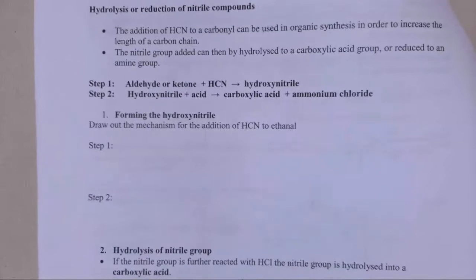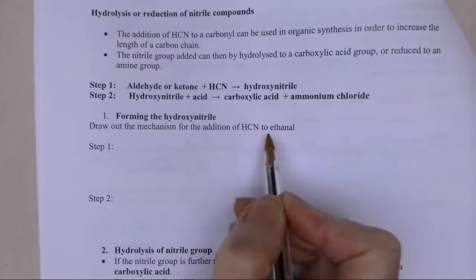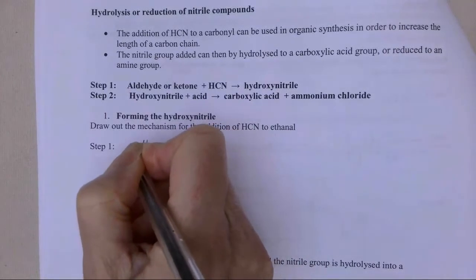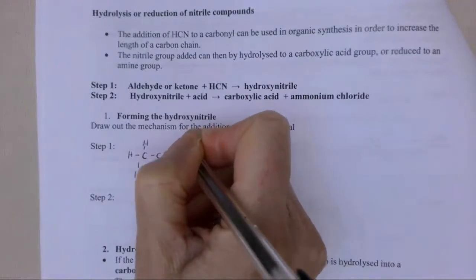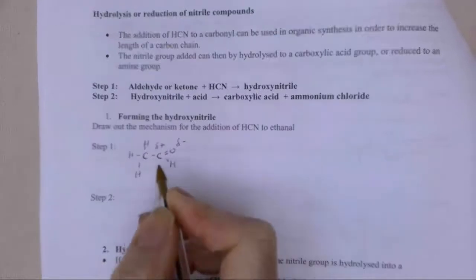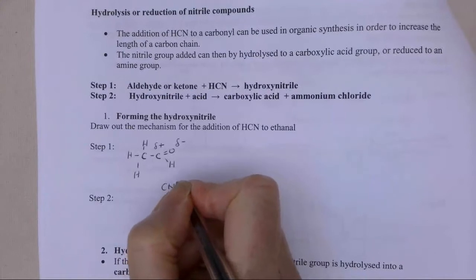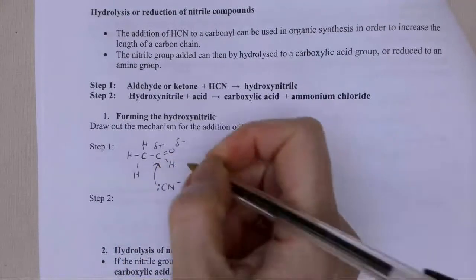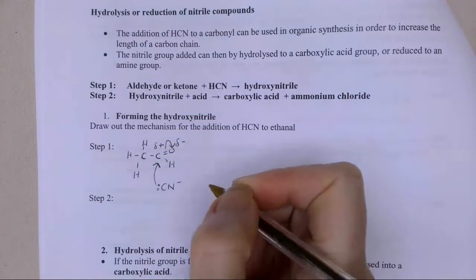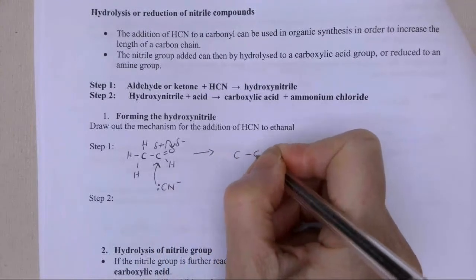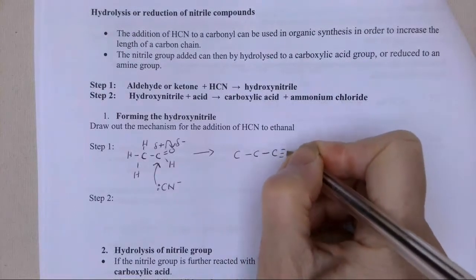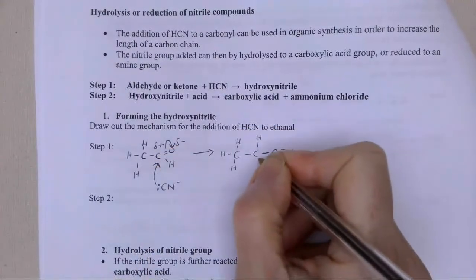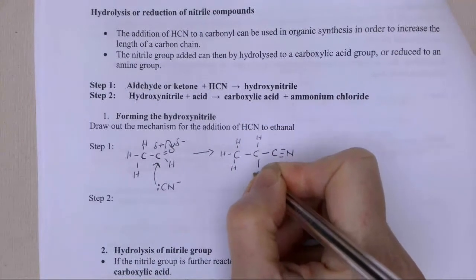First of all, forming the hydroxynitrile. Just to remind ourselves, we're doing HCN in the presence of KCN to ethanol. So we start with our ethanol molecule. This is basically just a reminder from the last lesson. I've got that dipole on this bond - delta negative, delta positive - because we've got an electronegativity difference between the oxygen and the carbon. We've got our cyanide ion with the lone pair on the carbon, and that's going to attack that delta positive carbon, pushing the pi electrons out and onto my oxygen. So I get my intermediate, and I've now got my C triple bond N on. I've increased my carbon chain length by one, and this carbon still has that oxygen on it, but it's now an O-negative with a lone pair.